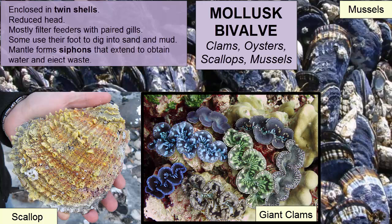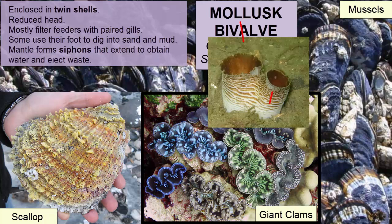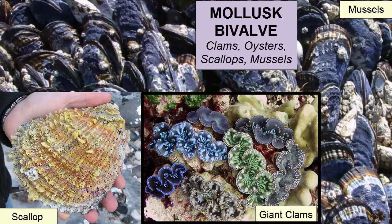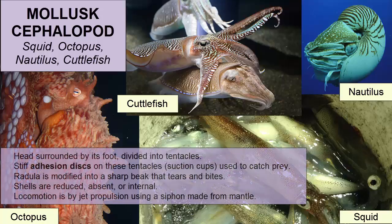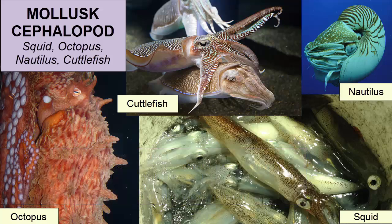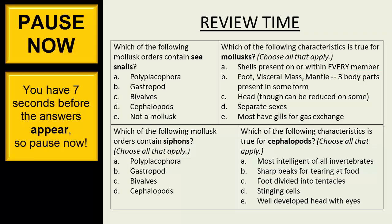Some bivalves use their foot to dig into sand and mud; their mantle forms siphons that extend to obtain water and eject waste. There are 13,000 species of bivalves, including clams, oysters, scallops, and mussels. Class Cephalopoda consists of molluscs with a head surrounded by its foot, which is divided into tentacles. Stiff suction discs on these tentacles catch prey; the radula is modified into a sharp beak. Shells are reduced, absent, or internal; locomotion is by jet propulsion using a siphon made from the mantle. There are 450 species, including squid, octopus, nautiloids, and cuttlefish.